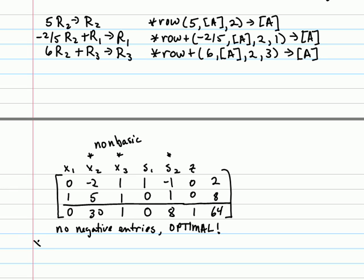As I read my solution from here, x sub 1 is a basic variable. It's a unit column, and the 1 is in the second row, which means x sub 1 is going to be 8. X sub 2 is non-basic, meaning it has a value of 0. X sub 3 is non-basic, meaning it has a value of 0. S sub 1 is a basic variable, it's a unit column. The 1 is associated with the 2, so s sub 1 is 2. S sub 2 is non-basic, it has the value of 0. And z has the value then of 64.